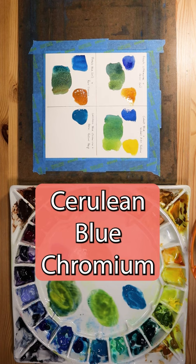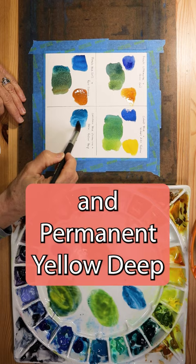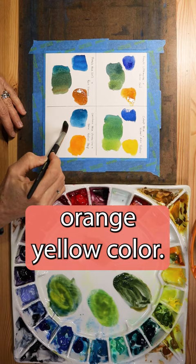Cerulean blue chromium and permanent yellow deep. This is a cool granulating blue mixed with a warm orange yellow color. It creates an earthy green with orange undertones.